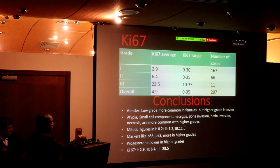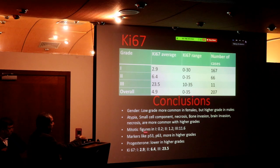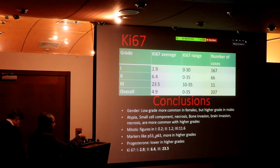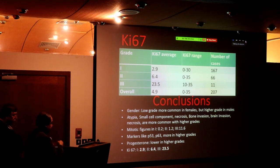In our study, low-grade meningiomas are more common in females, but higher grades are more common in males. Atypia, small cell component, necrosis, bone invasion, brain invasion — all more common as you go from lower to higher grade. I think any mitotic figures should be taken seriously. Grade three usually has very high mitotic figures. Markers like P53 and B63 are more common in higher grades. Ki-67 is much higher in higher grades and lower in lower grades.